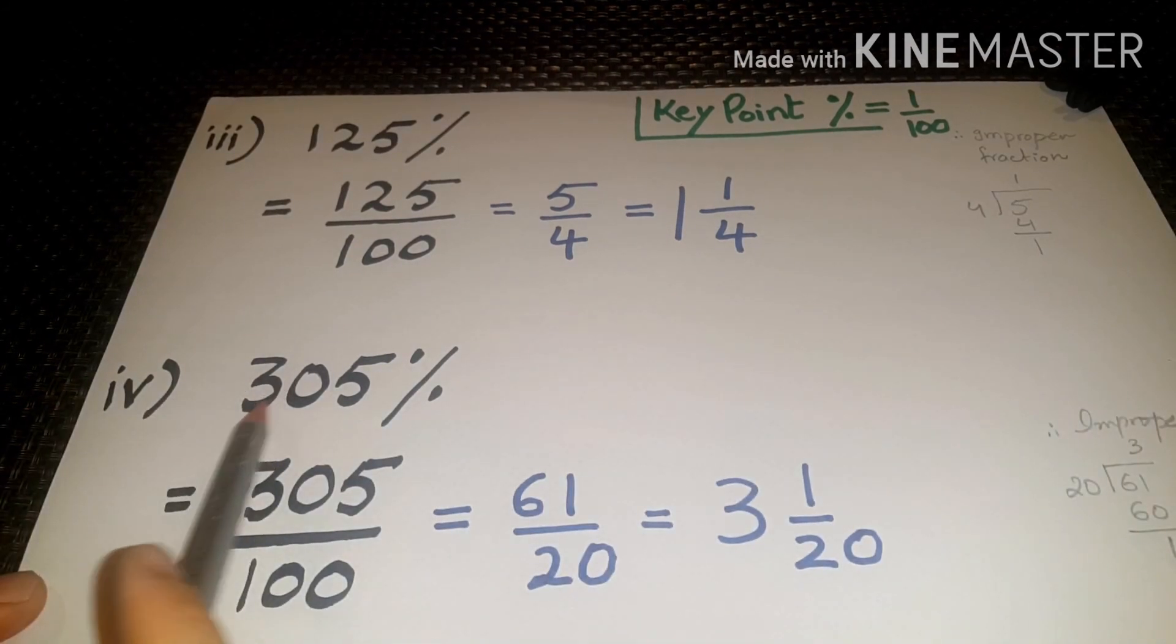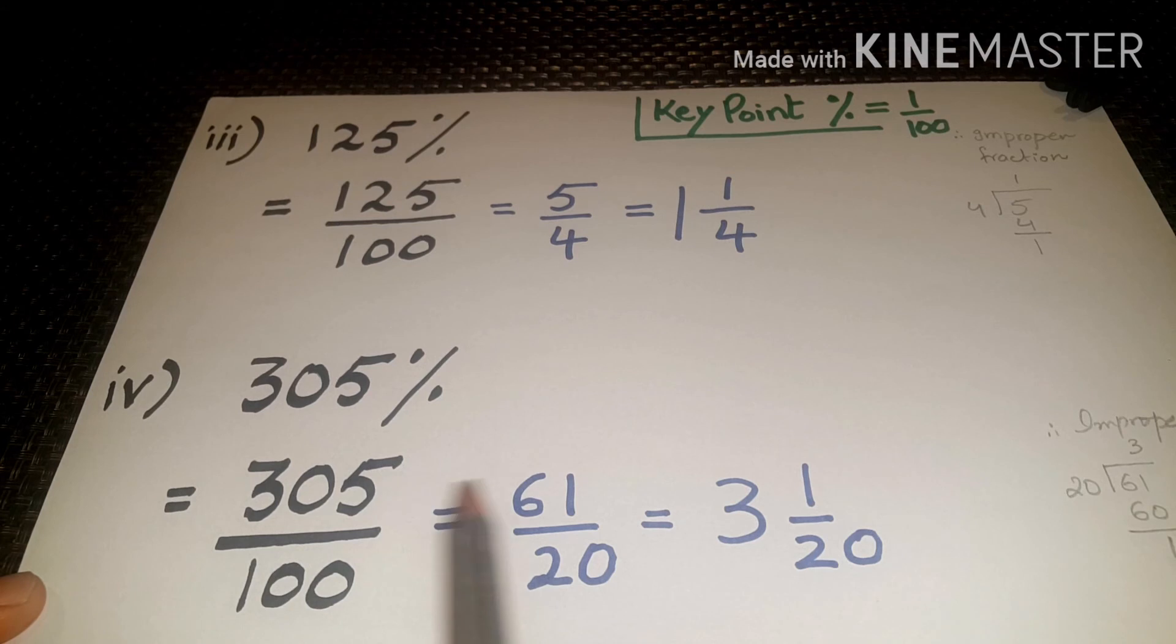Question number four, 305 percentage equals to 305 divided by 100. After solving it we get 61 divided by 20. Again it is an improper fraction, so we will divide it and we get the value as 3 whole number 1 by 20.